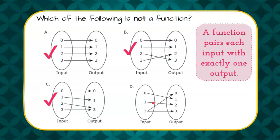0 maps to 1. 1 maps to 2. 3 maps to 0, and 3 maps to 3. So since 3 maps to two different outputs, it is not a function, and our answer is D.